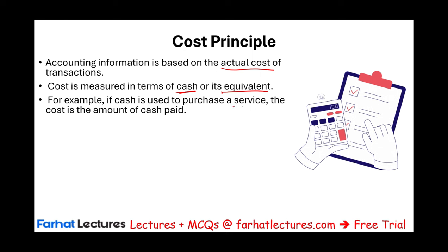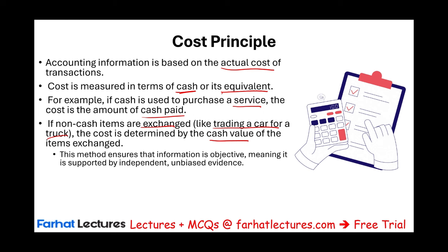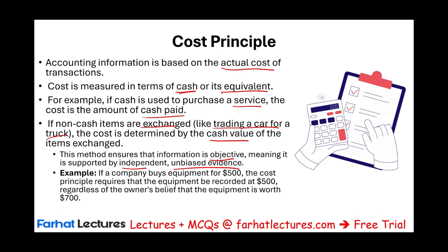For example, if cash is used to purchase a service, the cost is the amount of cash paid. If non-cash items are exchanged, like trading a car for a truck, the cost is determined by the cash value of the item exchanged — what did you give up? This method makes sure that the information is objective, meaning it's supported by independent, unbiased evidence. How much you paid for something is the best measurement of that something. If a company buys equipment for $500, the cost principle requires that the equipment be recorded at $500, regardless of the owner's belief that it is worth $700, $800, or $900.